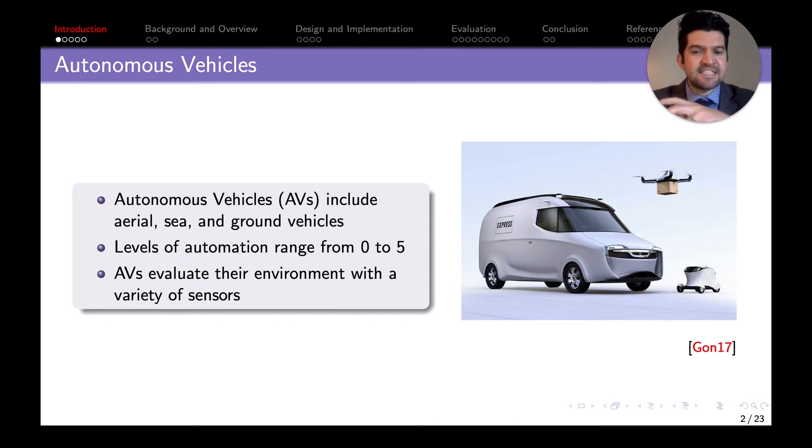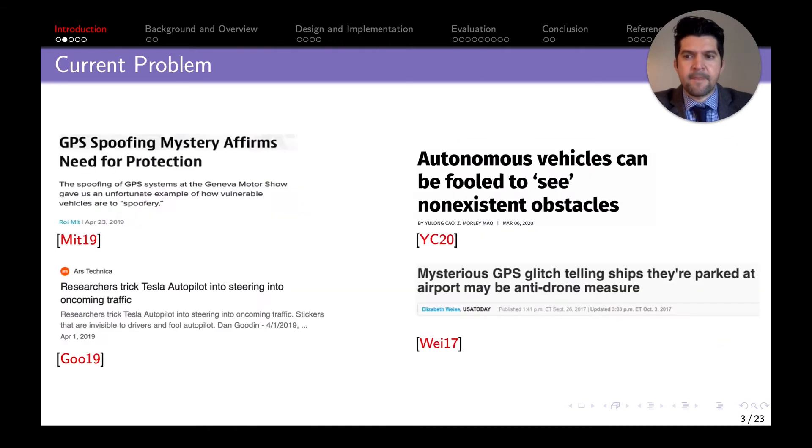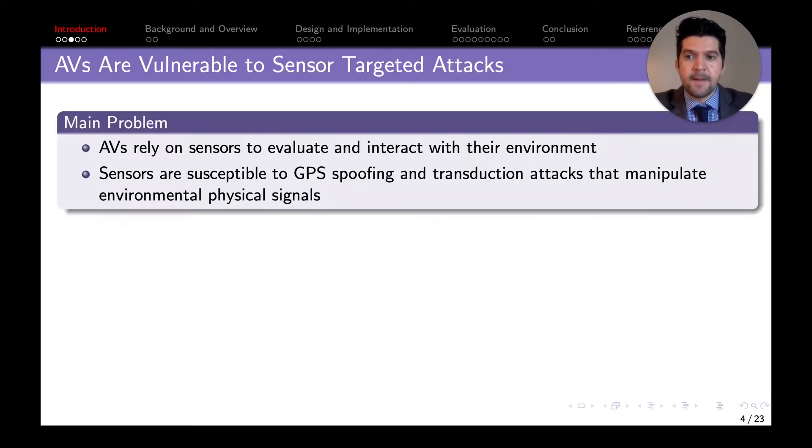Autonomous vehicles assess their environment with a variety of sensors. The current problem is that these autonomous vehicles rely on their sensors and these sensors are not foolproof. They can be spoofed, they can be manipulated, as we can see in these news articles.